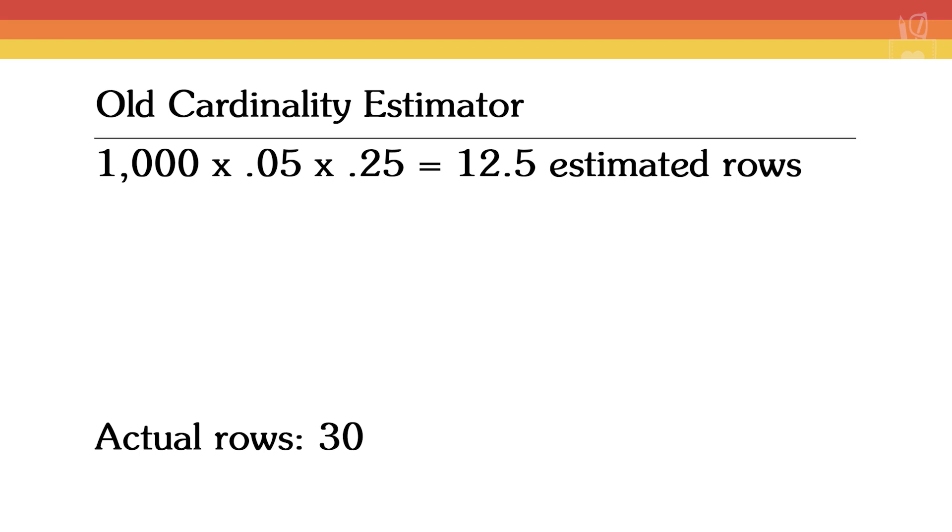In this example, the actual number of rows is 30, so the estimate is a little off. The new cardinality estimator says: if they're asking for artists where the artist is Oscar Peterson and where the music is jazz at the same time, those two predicates probably have something to do with each other. So it's going to be a little more optimistic in the number of rows assumed to come back — that the Venn diagram will have more of an intersection.